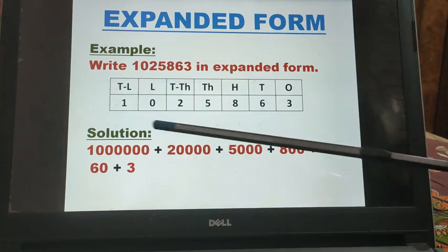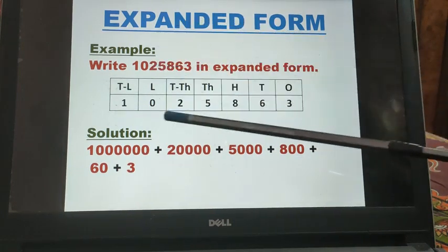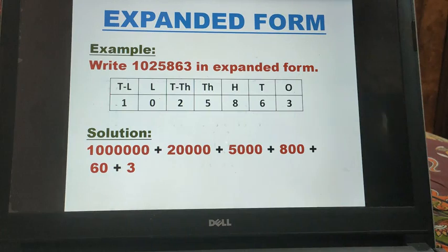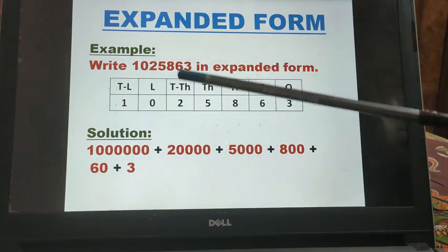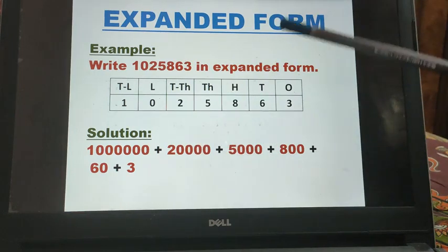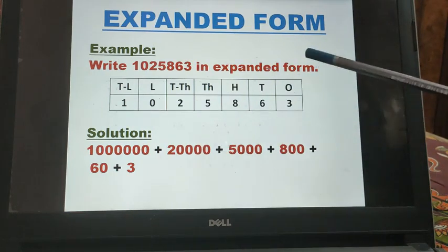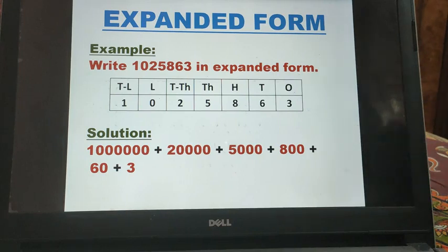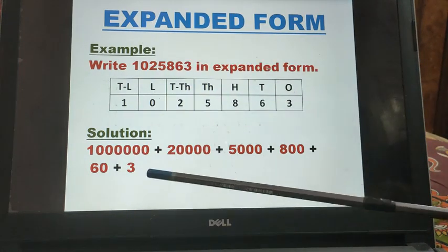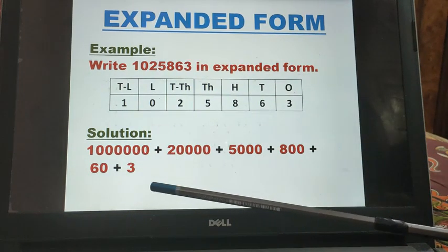Now we have to find the sum of these place values. So we will write expanded form of this number is 10 lakh plus 20,000 plus 5000 plus 800 plus 60 plus 3. But you have noticed that we have missed this lakh place.